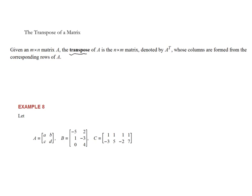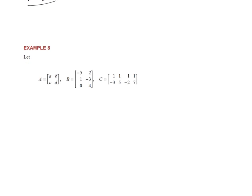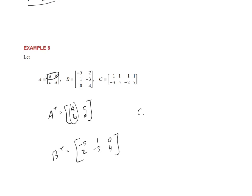The last main topic is the transpose of a matrix. Given an m by n matrix A, the transpose is n by m, written as A with a superscript capital T. The columns of A^T are formed by the corresponding rows of A — the rows become the columns. For example, if A has rows (a, b) and (c, d), then A^T has columns (a, b) and (c, d), effectively flipping rows into columns and columns into rows.